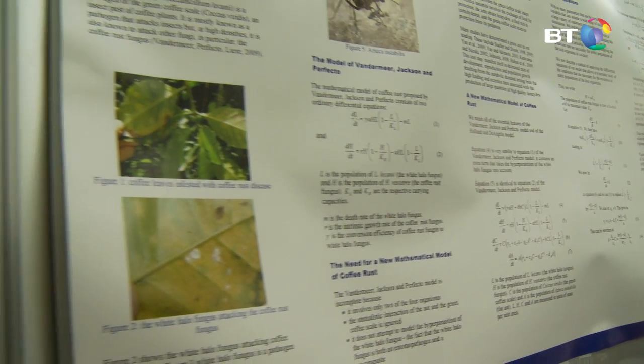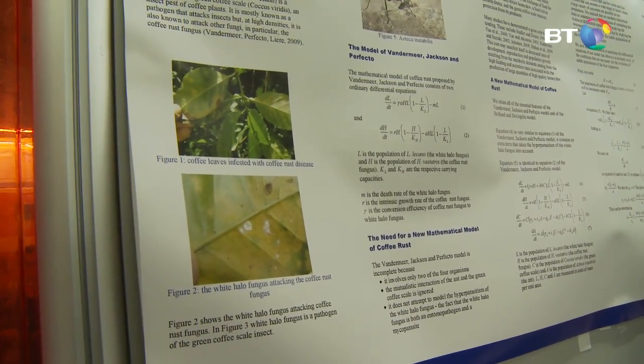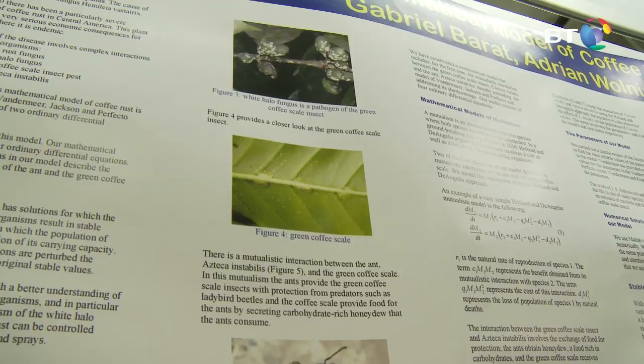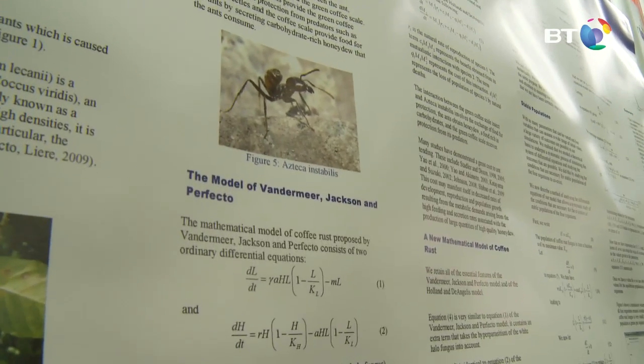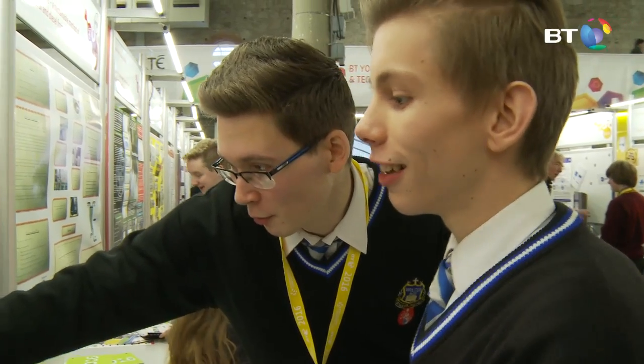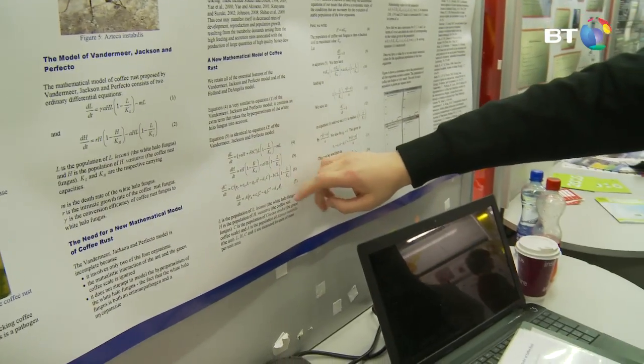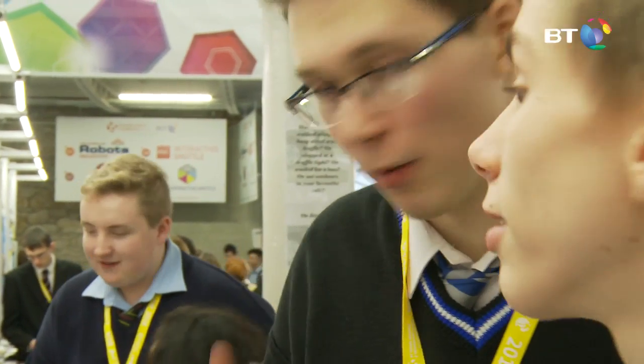We program these four organisms on our computers using Python and MATLAB, and we get results which are unstable at first. Me and my partner were unhappy with this because we were just inputting random values. So what we did was we got stable populations. In these stable populations we got coffee rust to a very low level, meaning instead of having the whole plantation destroyed, now we only have a few plants infected which can be replaced for a very low cost.